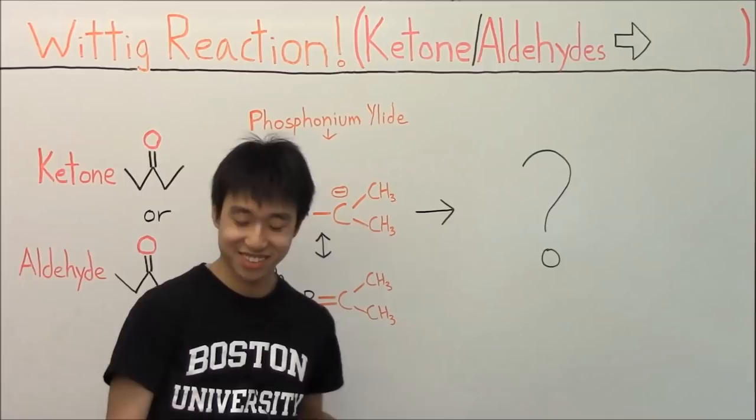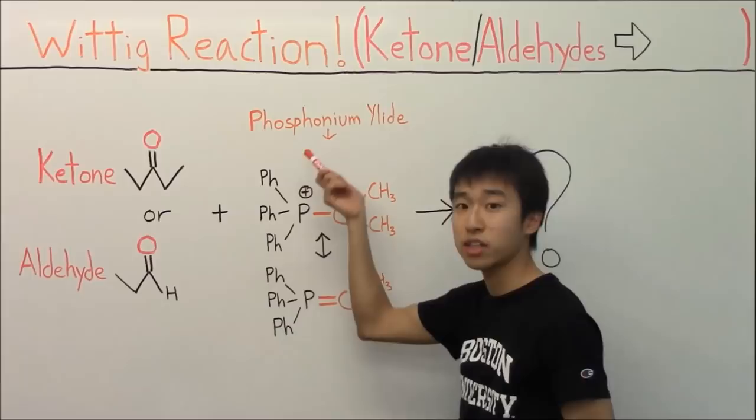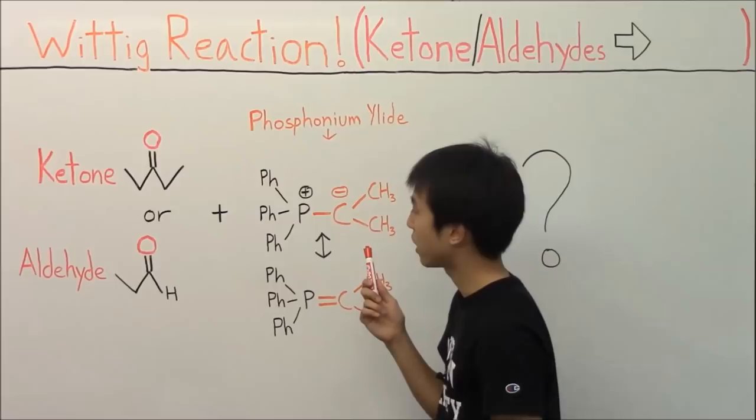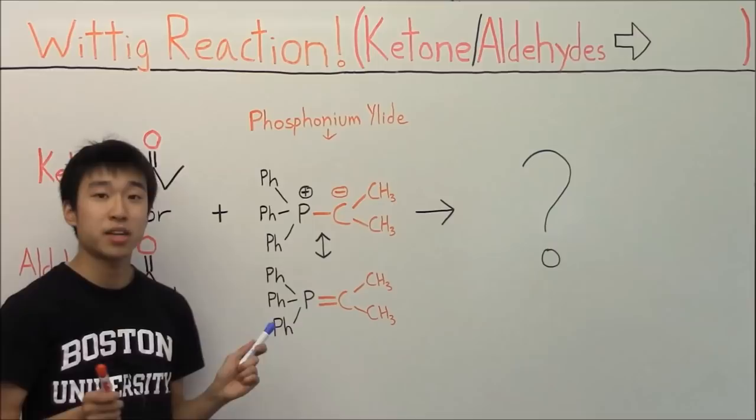What a nerd. No judging. Anyway, it involves a ketone or aldehyde as your starting material, and then you react it with something called the phosphonium ylid, which is this molecule over here. In case any of you guys were unsure about how to make a ylid or what a ylid is, be sure to check out my extra video that goes into more detail about this.